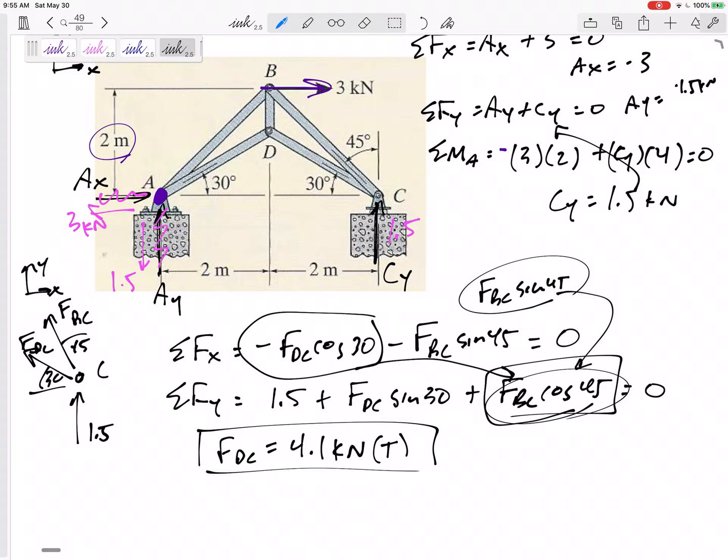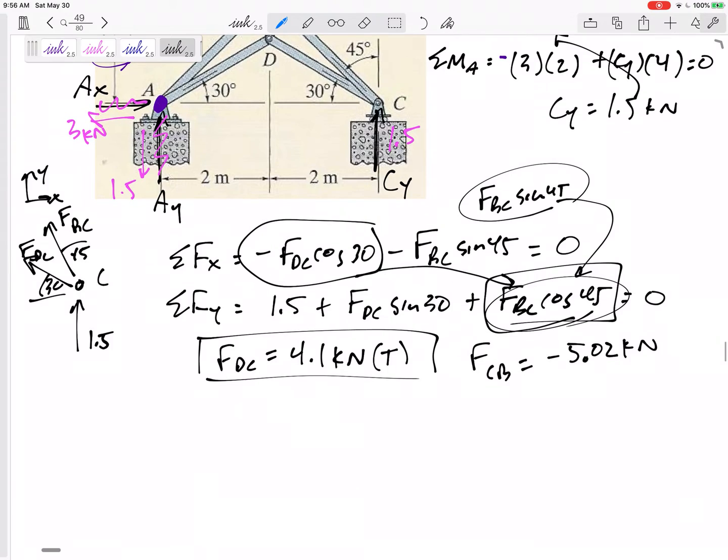It is 4.1 kilonewtons in tension. So box that in, give me the magnitude, and then tell me in parentheses T for tension, C for compression. And then I would plug this back into my equation, and I would get FCB is equal to negative 5.02 kilonewtons. So FCB is 5.02 kilonewtons compression. This right here is all the information I need because everybody is going to get that answer whether you chose wrong first or not, whether you started at joint A or C.